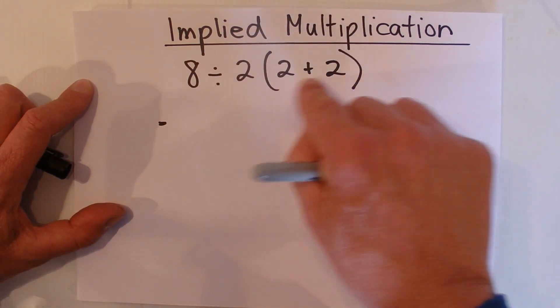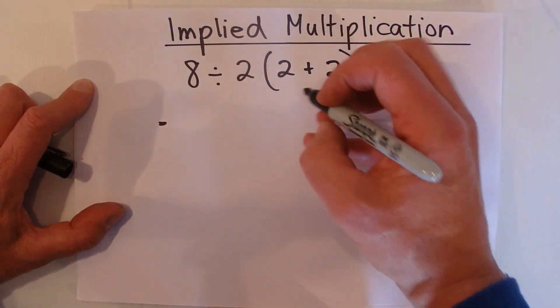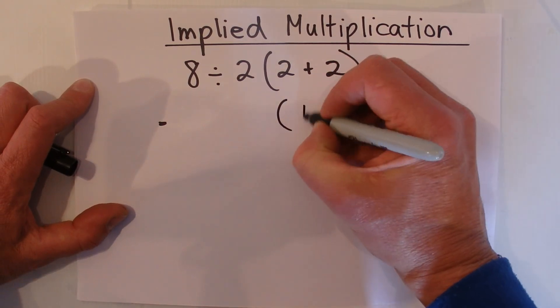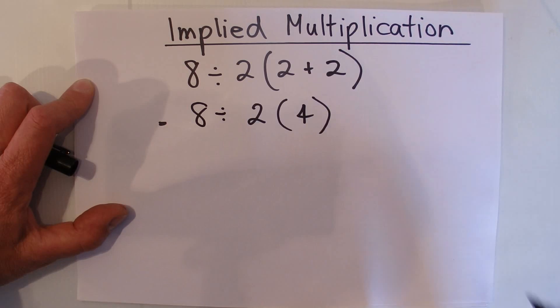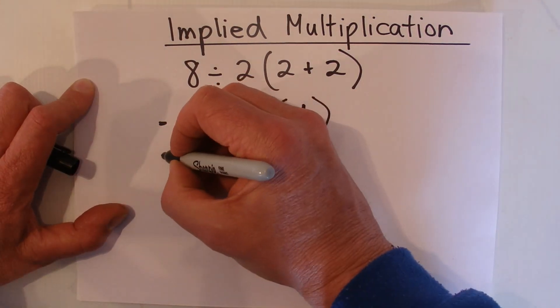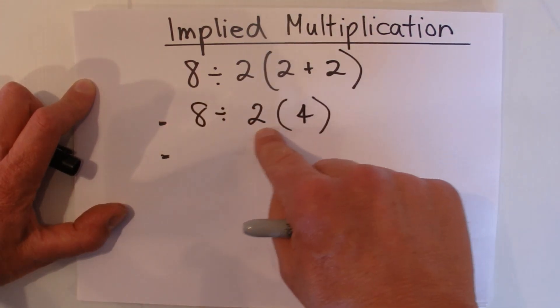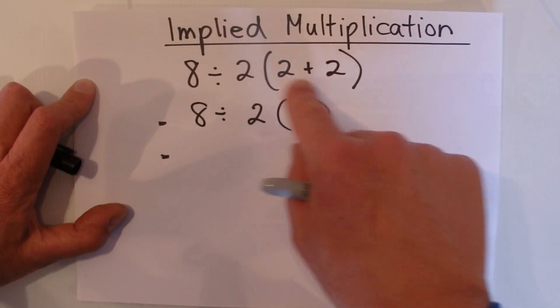We still got to do what's in the brackets first. 2 plus 2 is 4, and that's the first step of solving that equation.